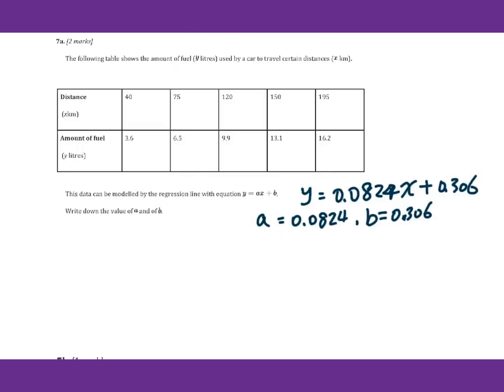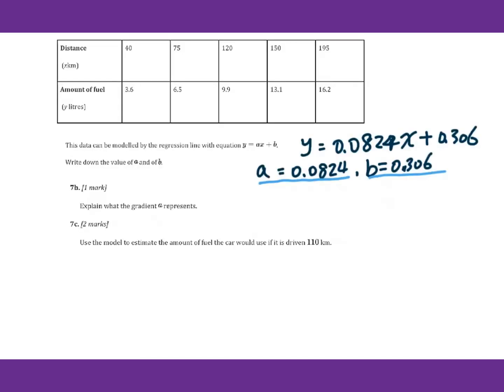For 7a, you just need to go to calculator and get this regression function. That a equals 0.0824, b equals 0.306. Then go to 7b.